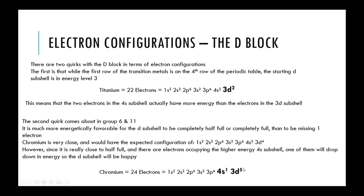The same would be true with copper, except instead of starting with 3d⁴ in theory, it would be 3d⁹ — very close to being completely filled. One of these high-energy electrons drops back down and fills in that gap. So when looking at electron configurations of the D orbitals, you have to keep two things in mind: the energy level drops for the D subshell when starting on the transition metals, and in groups 6 and 11, one of the higher-energy electrons fills in the remaining part of the D subshell.